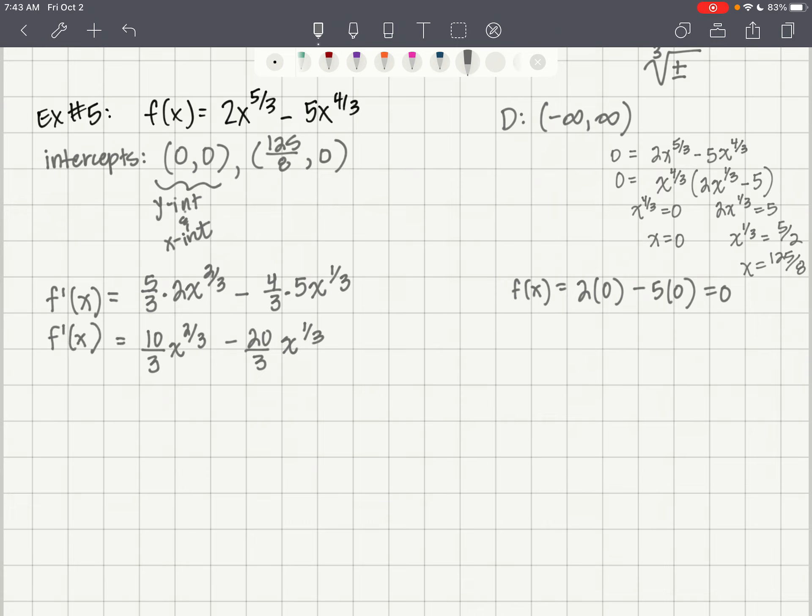We need to set that equal to 0 and solve, so we'll be factoring. We can take a 10/3 out, and we can take an x to the 1/3 out. It's going to leave us x to the 1/3 minus 2 inside our parentheses. This produces x equals 0, and this factor produces x equals 8.